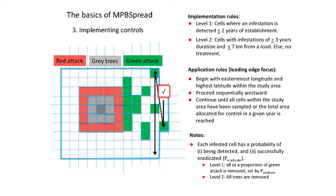We apply these rules using a leading-edge focus, emulating the approach currently employed by Alberta Ag and Forestry. We begin with cells at the easternmost longitude and highest latitude, then work sequentially westward, continuing until all cells have been treated or we run out of treatment resources. Each infested cell has a probability of being detected and successfully eradicated. For level one applications, all or a proportion of the green attack is removed, set by a parameter called P-eradicate defined in advance. Level two, being clear-cut harvesting, removes all trees from a given cell.